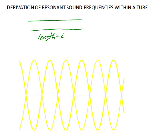If we have a hollow tube, sound waves will bounce back and forth within the tube, and only certain frequencies will resonate. Only certain frequencies will set up standing waves along the tube. What we're going to do here is derive exactly what value of the frequency will resonate within the tube.